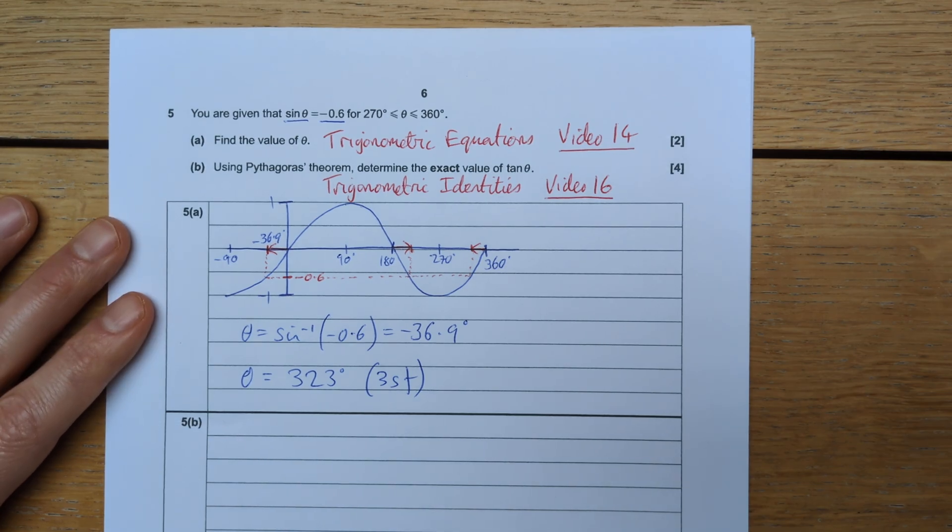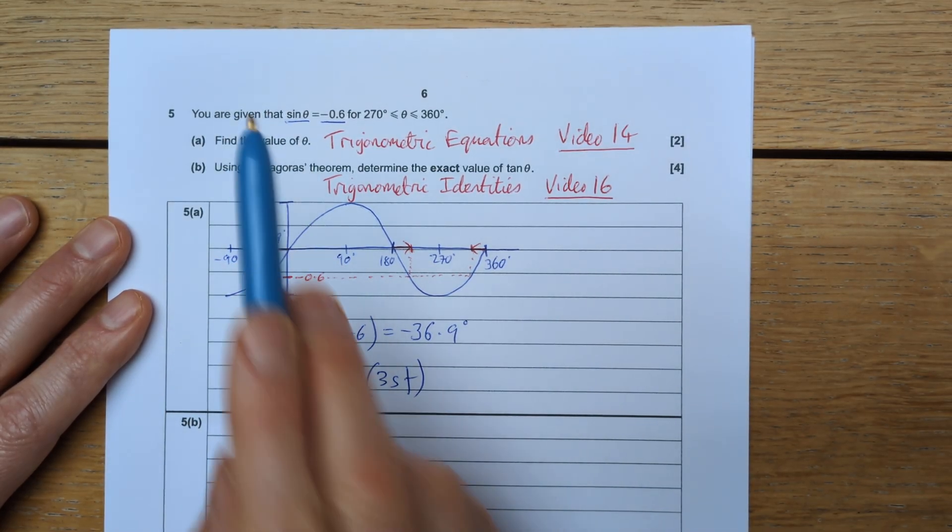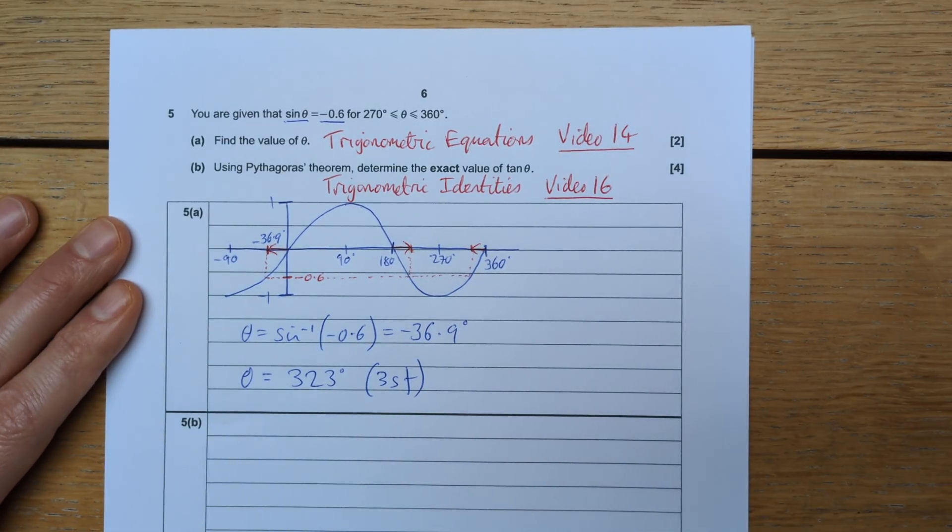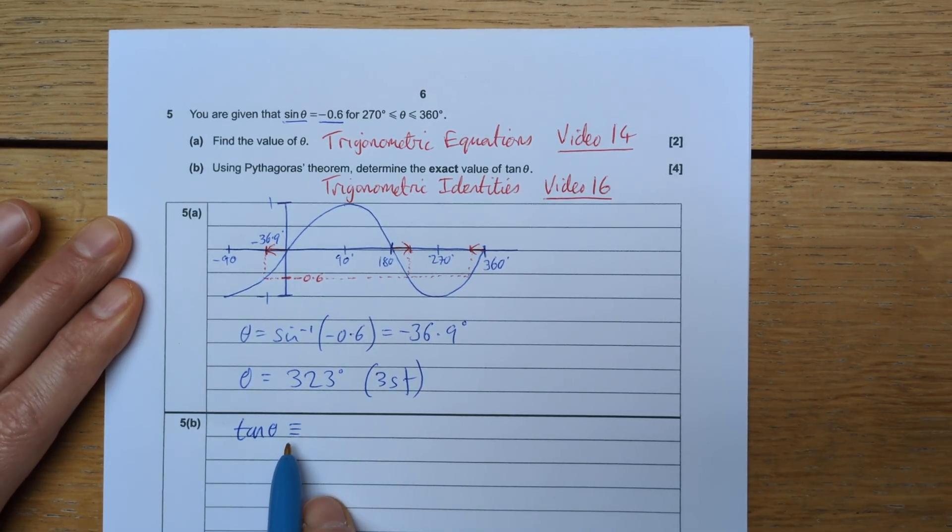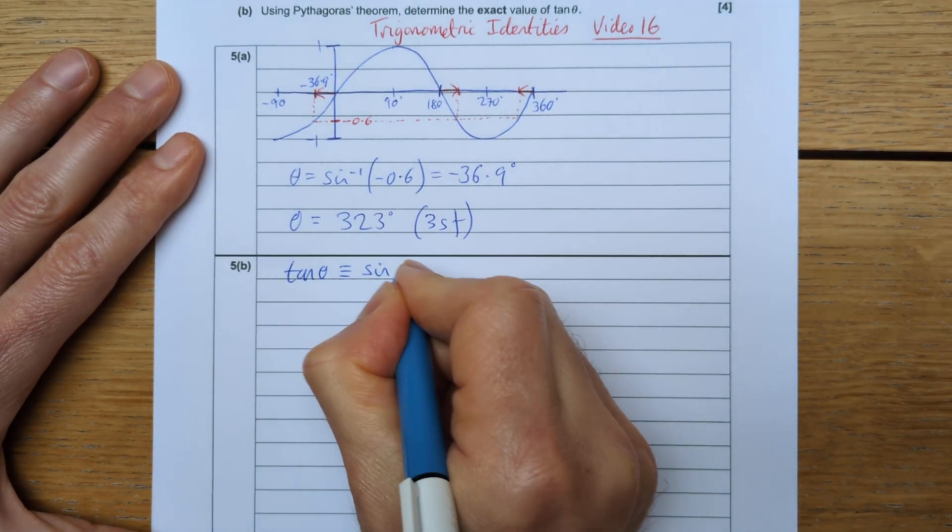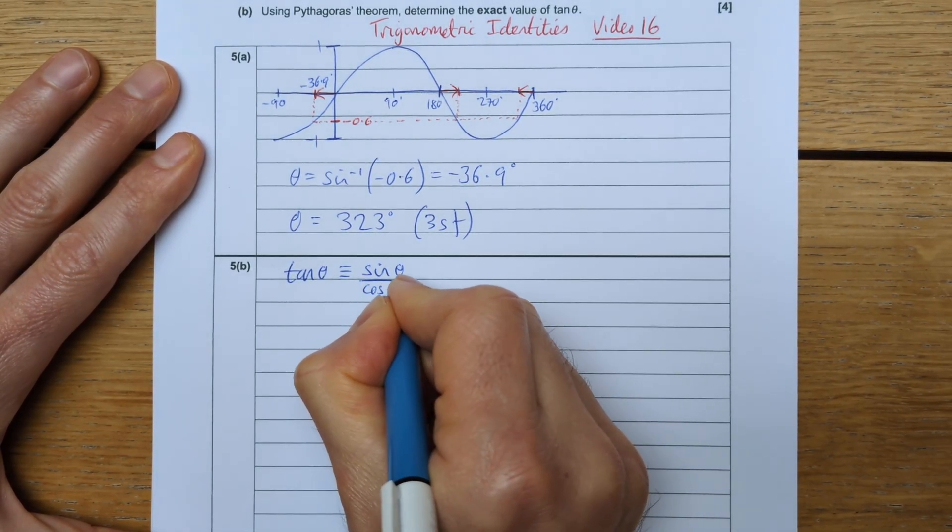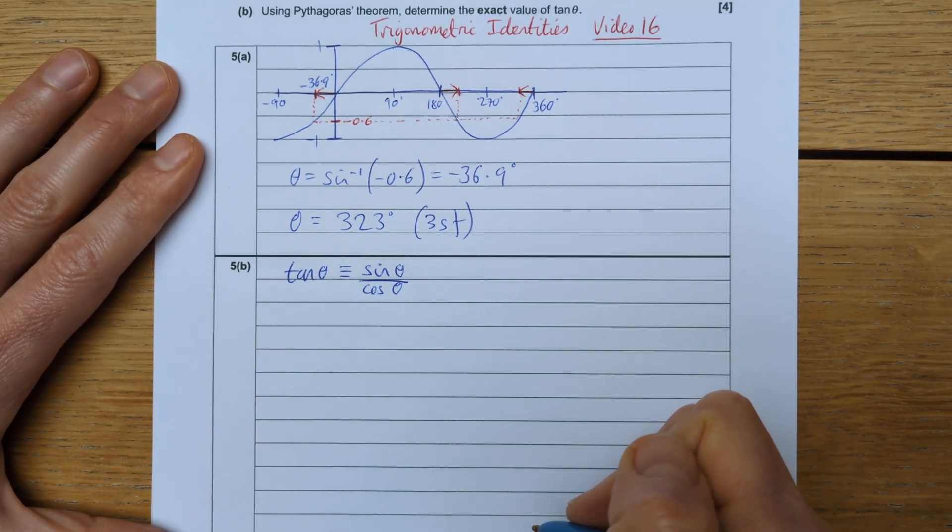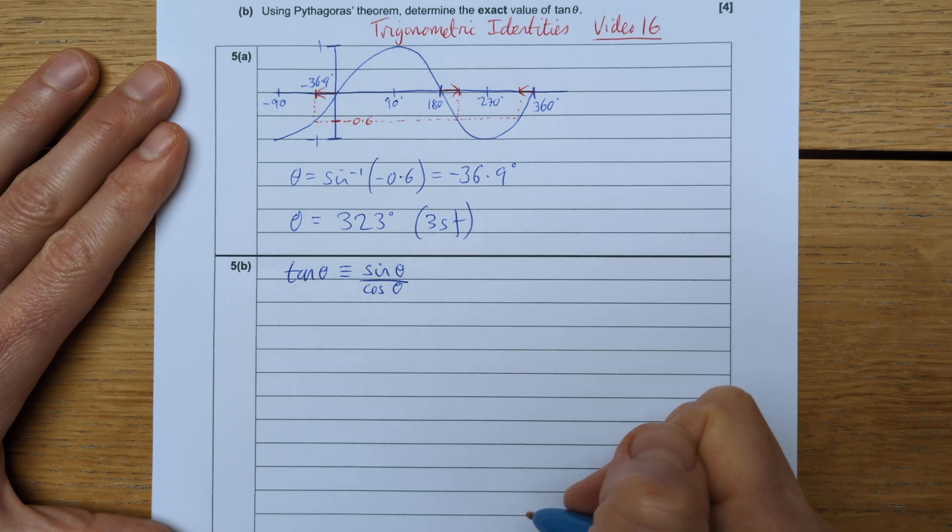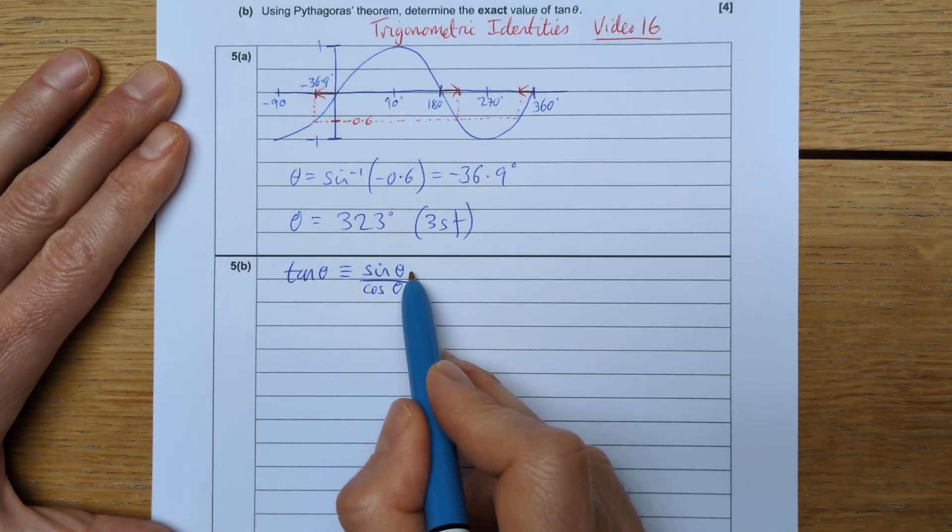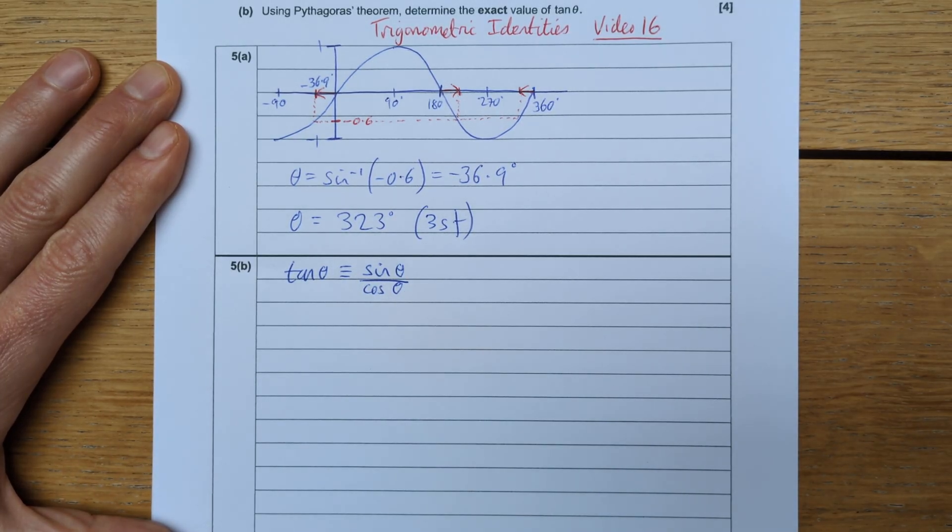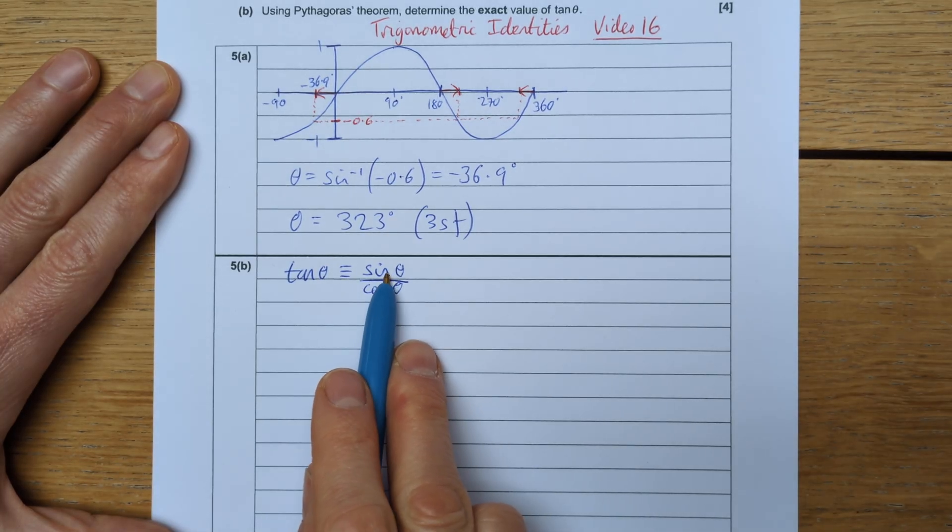Part B says, using Pythagoras theorem, determine the exact value of tan theta. Okay, so we are given the value of sin theta. I know that in one of my trigonometric identities, that tan theta is always equal to sine theta divided by cosine theta. That is always true. So if I knew cosine theta, I could find tan theta since I already have sine theta. The question is, how do I find cosine theta based on sine theta?